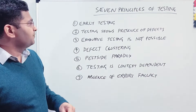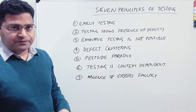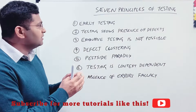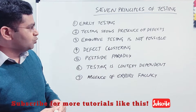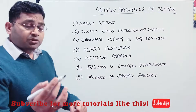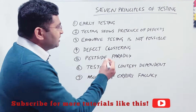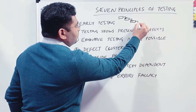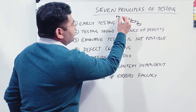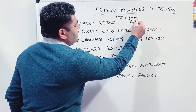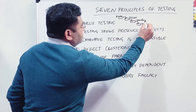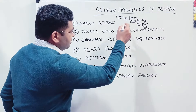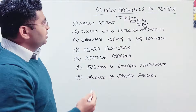The first principle of testing is early testing. As the name implies, you start testing pretty early in the cycle. When we talk about the software development life cycle, the traditional approach is the waterfall approach. In that life cycle, you had the requirements phase, then design, then development, then testing, then deploy and maintenance — a waterfall structure, which is why it was known as the waterfall approach.